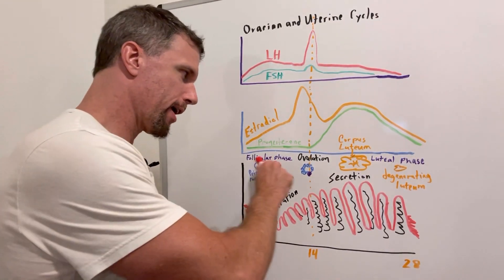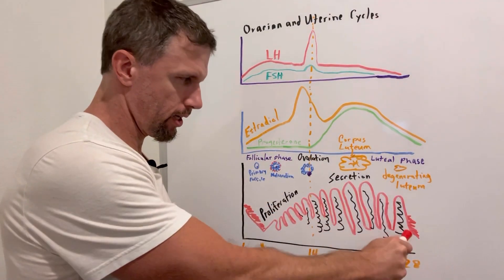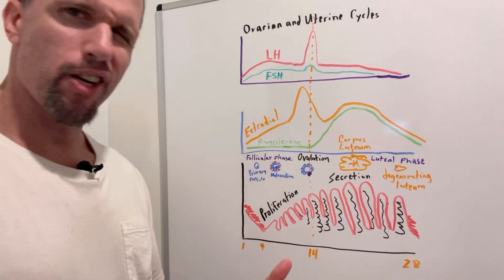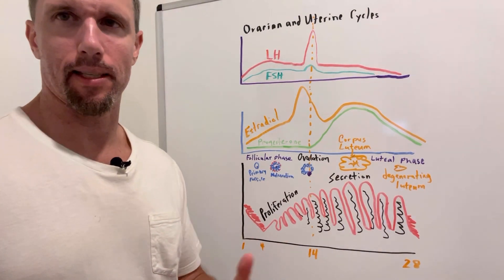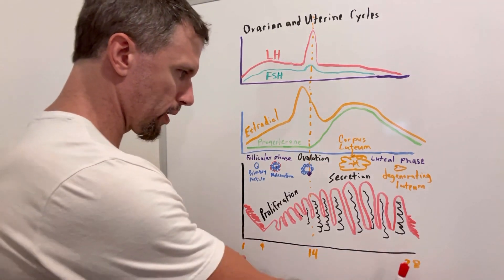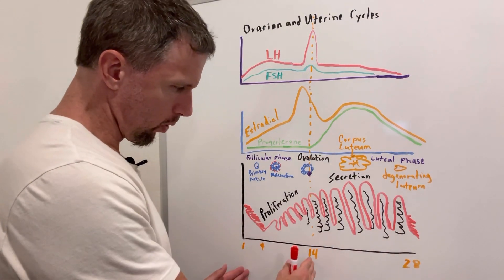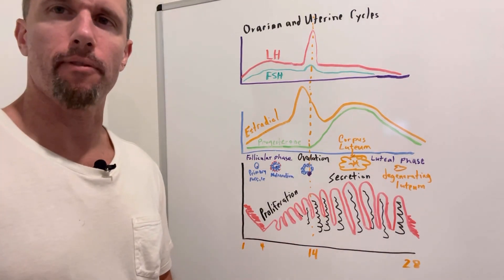This video we're talking about the ovarian and the uterine cycles, and a good average for this is about 28 days. It can vary from person to person, but we're going to go 28 days here with the midpoint being 14, and that's where ovulation happens.